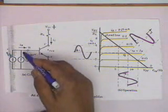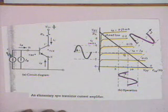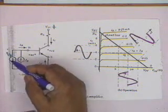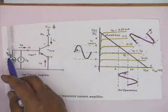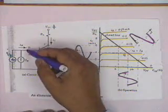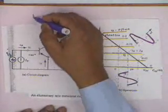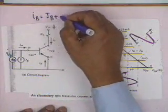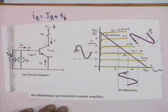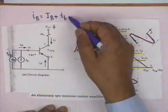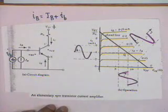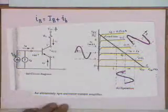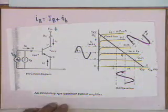The emitter is connected directly to the common terminal. To the base are connected two current sources: one is a DC current source I_B (capital), and the other is an AC signal source i_b (small). Therefore, the total base current is I_B + i_b, where i_b is the varying signal current and I_B is the steady current established by a battery and resistances.